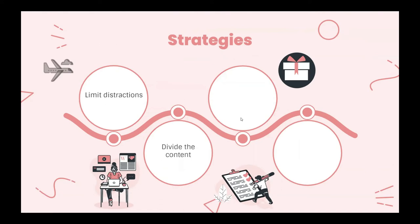Next is divide the content. Say you have a really big assignment such as a research paper — all that work is quite overwhelming. Dividing it into sections and taking breaks between those sections will help keep you on task and focused. Next is set up a reward system. I work for a certain amount of time and then reward myself with a snack break, going on my phone, or listening to music. However, you have to honor this system for it to work, or you can take advantage of the rewards and it can lead to even more procrastination, so be wise with this.